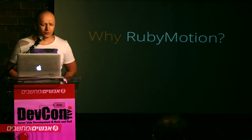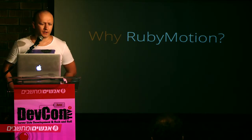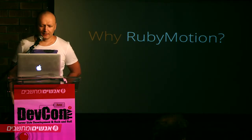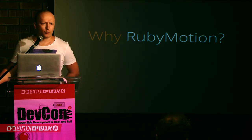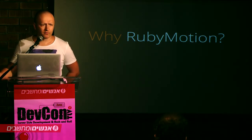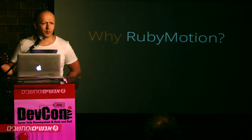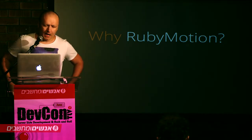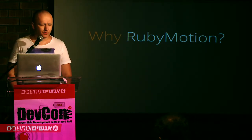Why would you use RubyMotion and not the native original Xcode toolset? First of all, as I said, Xcode is an IDE which sucks. And Objective-C is a language which is really old and is based on C, so it brings a lot of baggage with it. It's not a really pleasant language to work with, as opposed to Ruby which is a really modern, powerful language with very nice functional capabilities and metaprogramming capabilities. And I actually love Ruby very much, so this appealed to me right away.